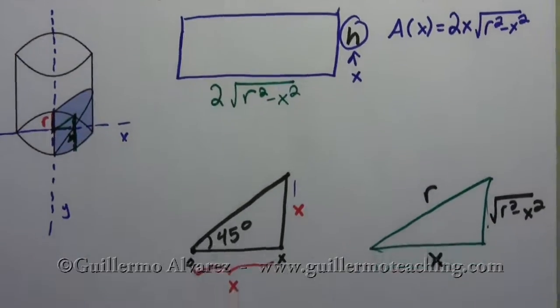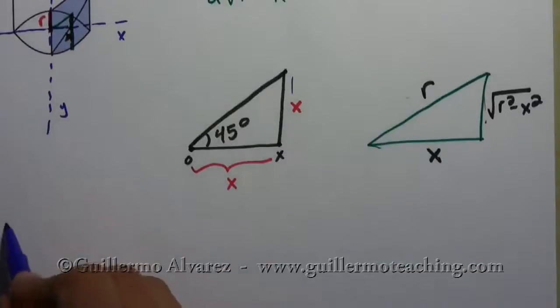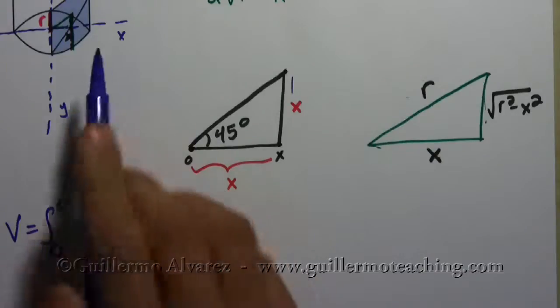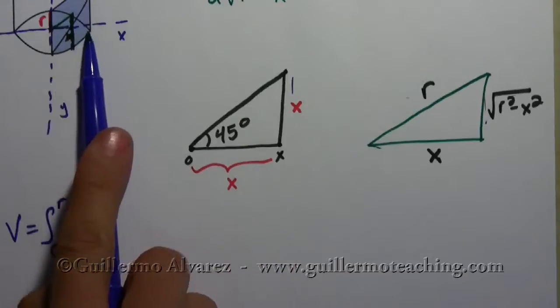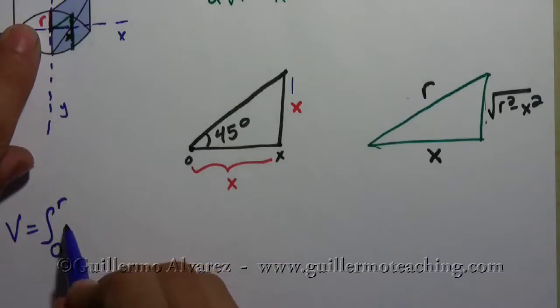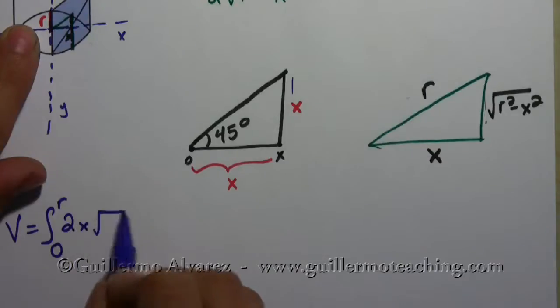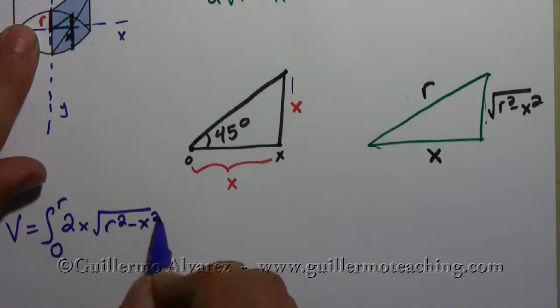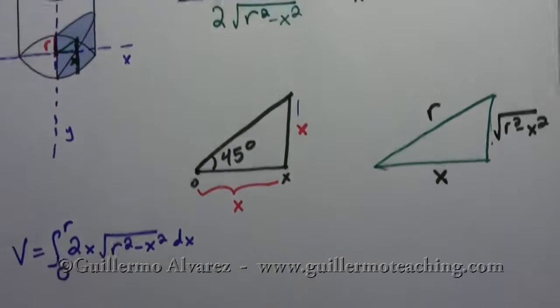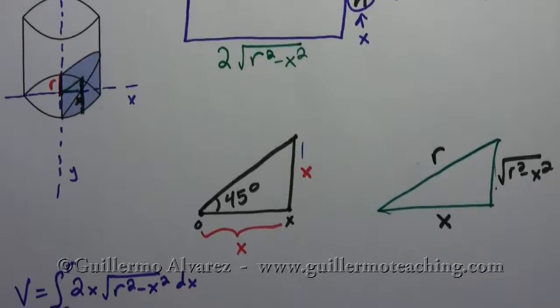Okay. So then the integral that I'm looking for to find the volume is going to be the volume, is going to be the integral from 0 to r, because I'm going from here from 0 until the very end, which is when x is equal to r, or the radius of the area, which is 2x square root of r squared minus x squared dx. And that's my setup.